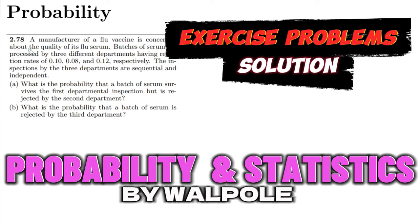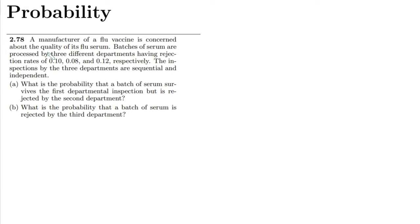Welcome. This is question 2.78. The statement is that a manufacturer of a flu vaccine is concerned about the quality of its flu serum. Batches of serum are processed by three different departments having rejection rates of 0.10, 0.08, and 0.12 respectively. Let me write the given data first.